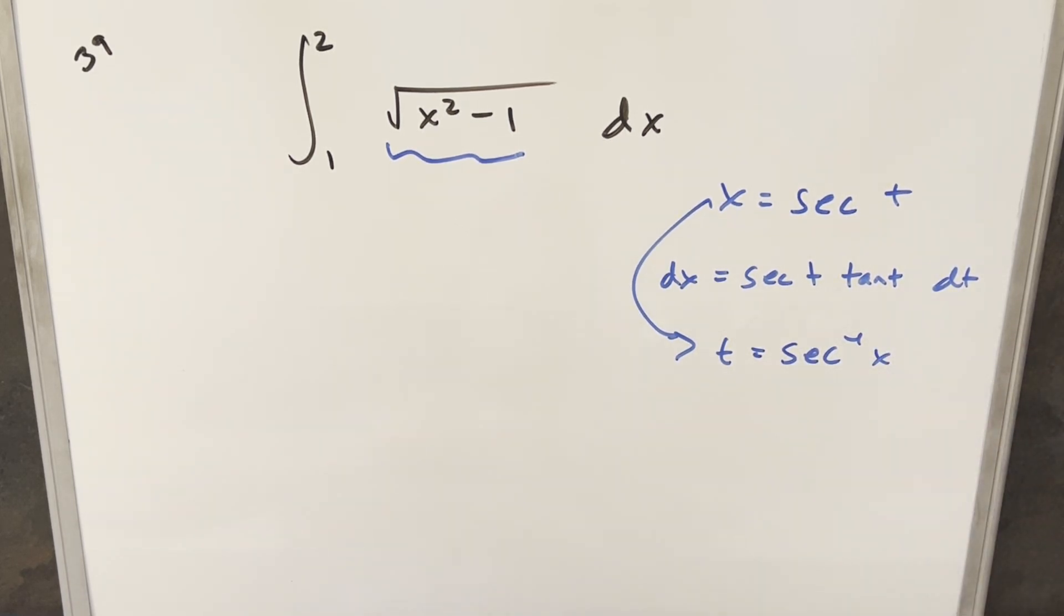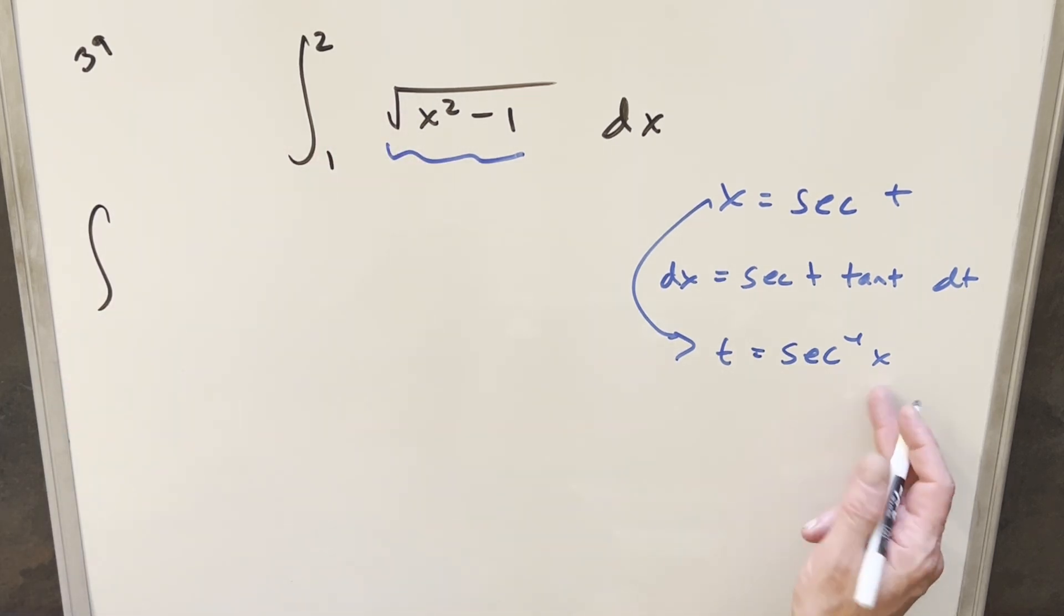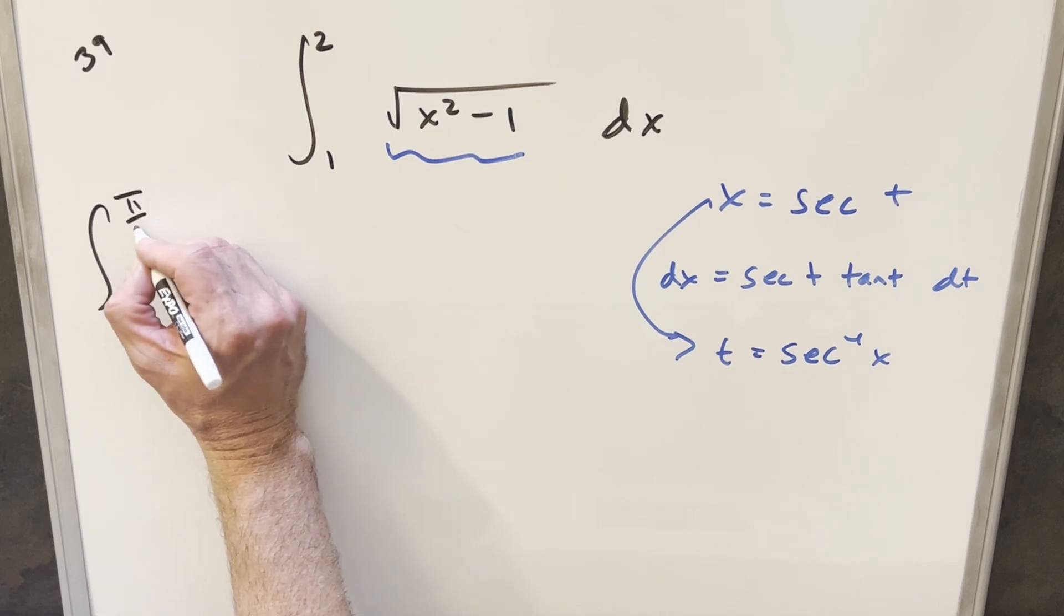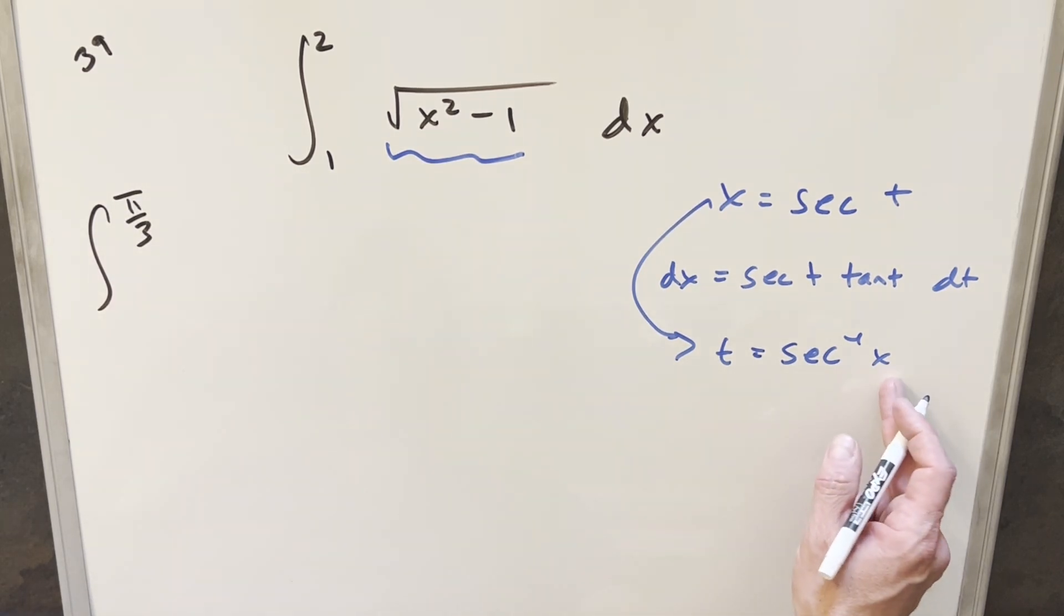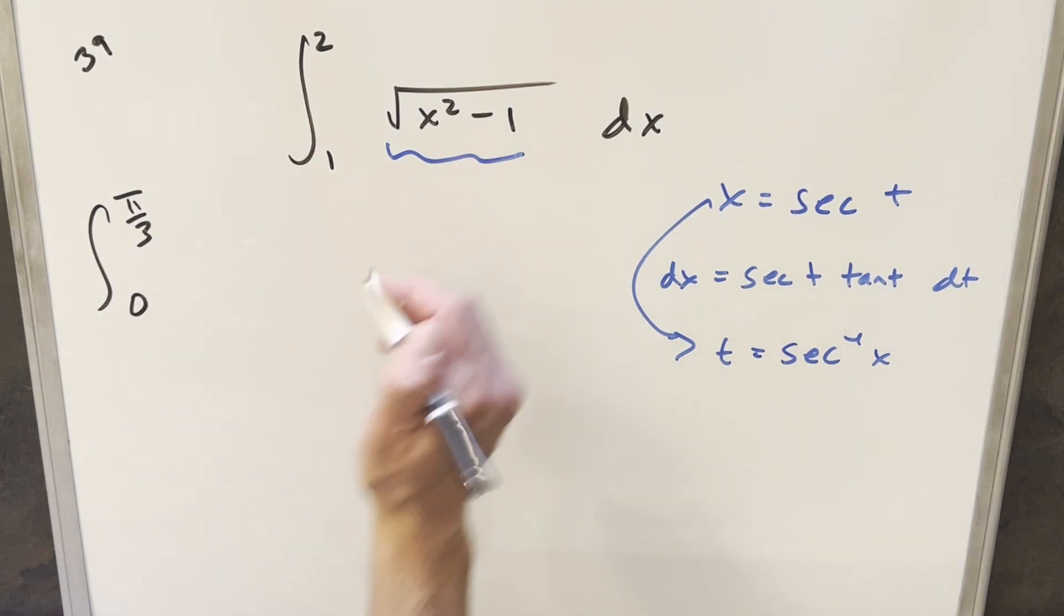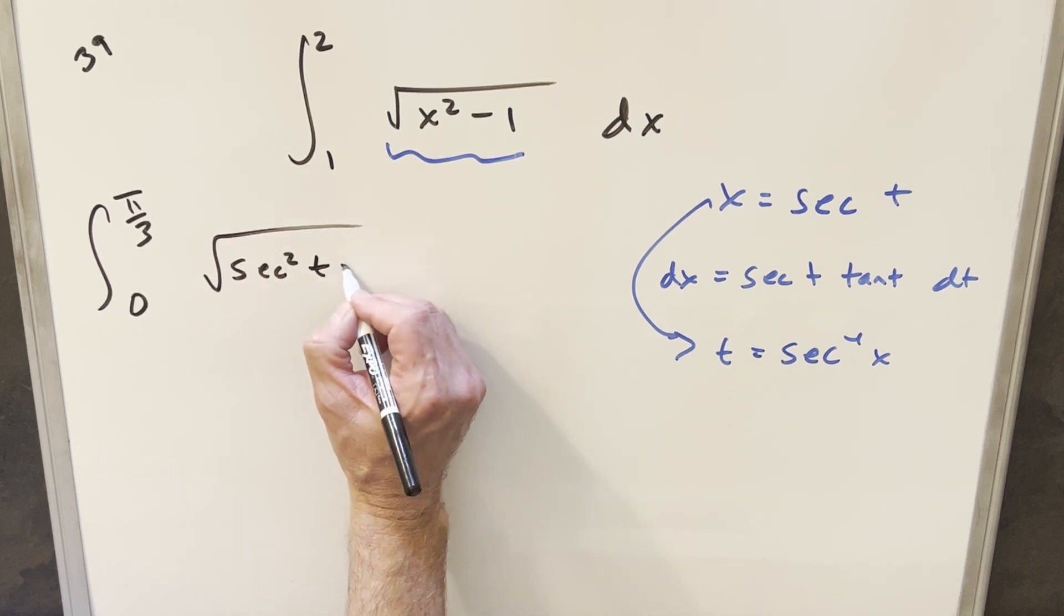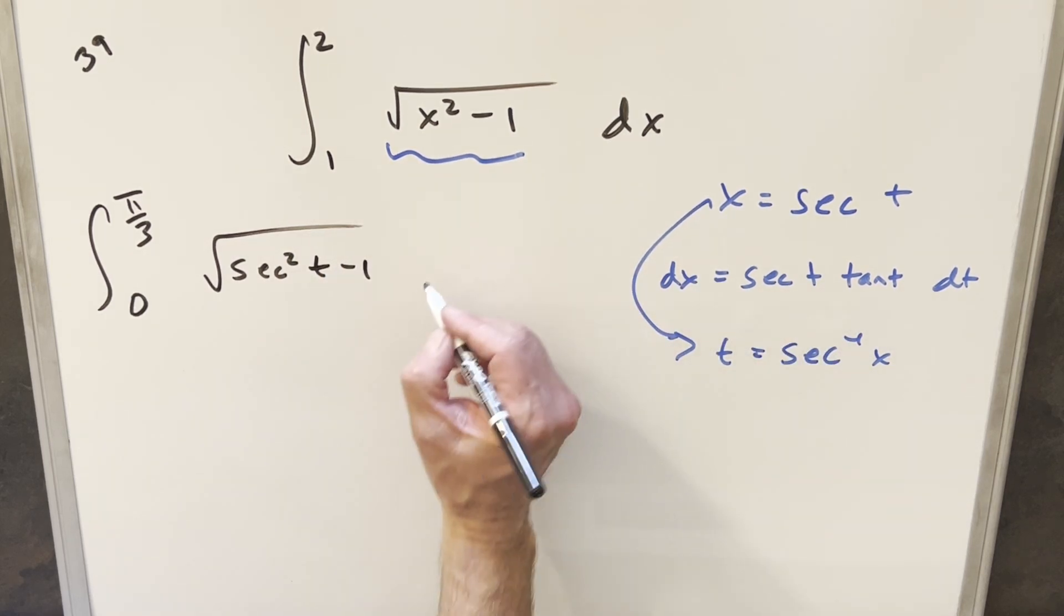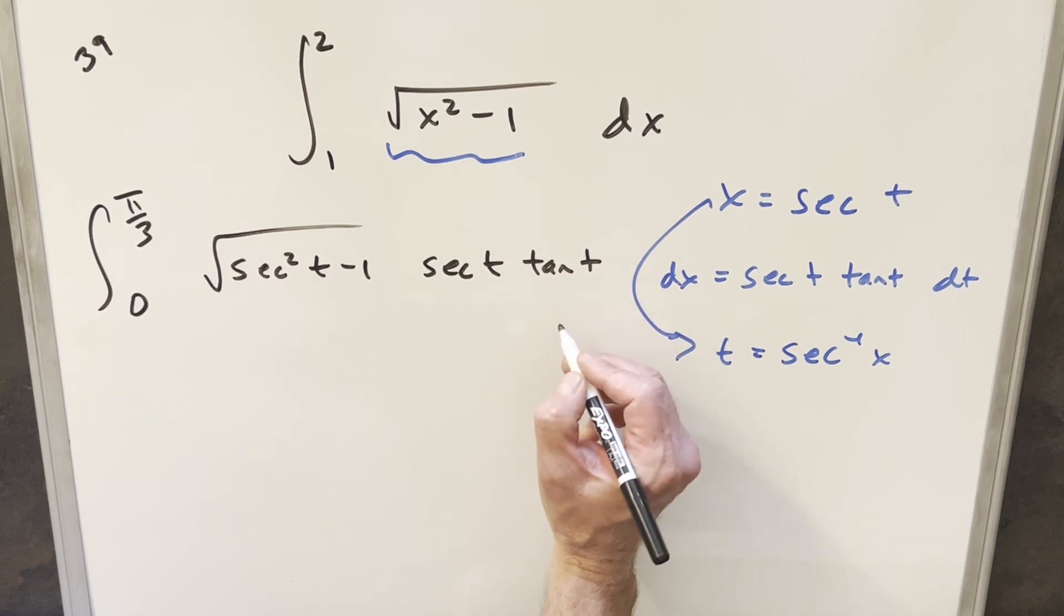So now I'll just go ahead and substitute over here. So first, looking at sec inverse of 2, that's going to happen when cosine is 1 half. That's going to be at pi over 3 right there. And then plugging in 1 right here, sec inverse 1, that's going to be when cosine is 1, that's going to be at 0. And then substituting here, we're going to have square root secant squared t minus 1 dx is going to be this. So that's going to be secant t tan t dt.